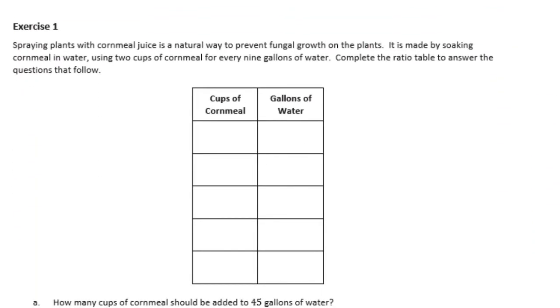Exercise 1. Spraying plants with cornmeal juice is a natural way to prevent fungal growth in the plants. It is made by soaking cornmeal in water using 2 cups of cornmeal for every 9 gallons of water. Complete the ratio table to answer the questions that follow. So we have 2 cups of cornmeal for every 9 gallons of water.